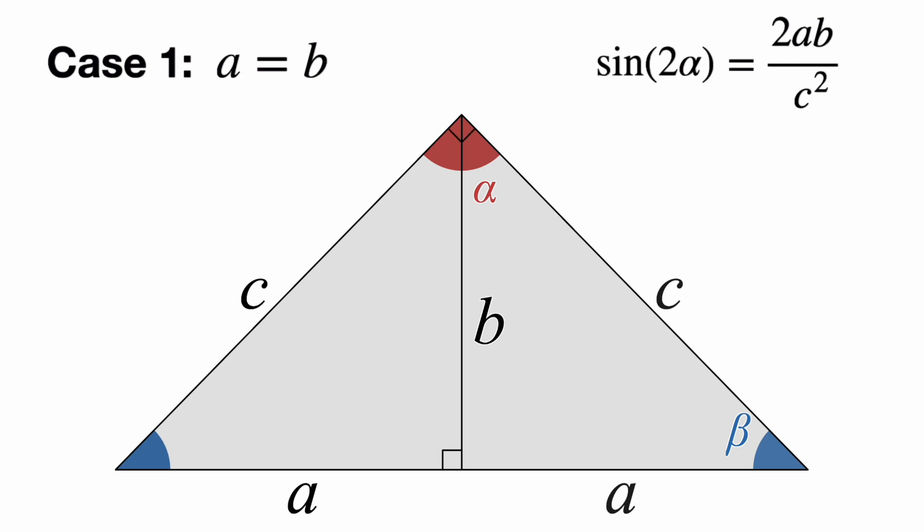And the sine of a 90 degree angle is 1. So, if 2ab over c squared is 1, then 2ab equals c squared. And 2ab is ab plus ab. And ab is both a squared and b squared, since a and b are the same thing. So, that's QED for this simple case.